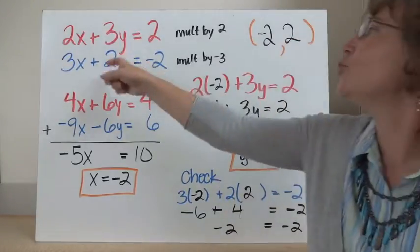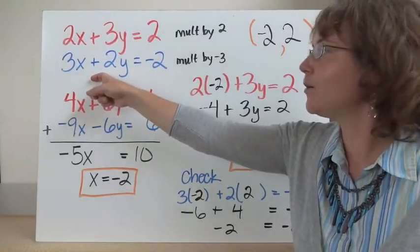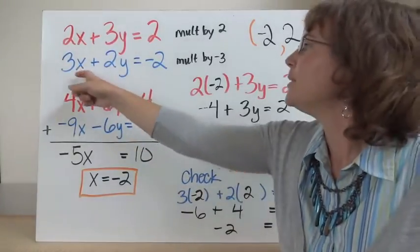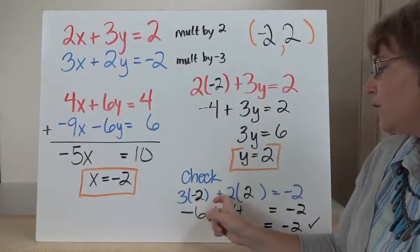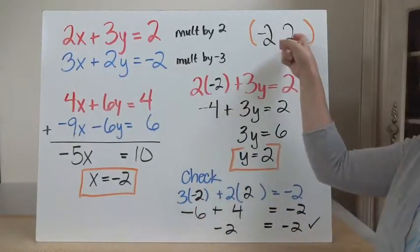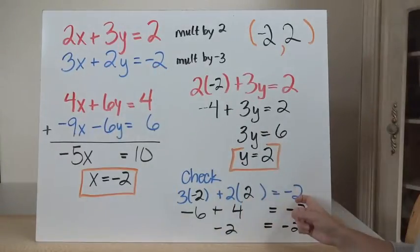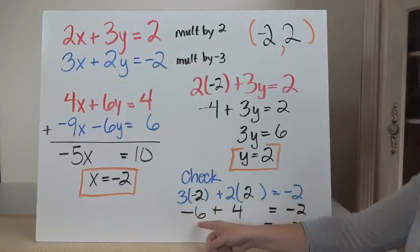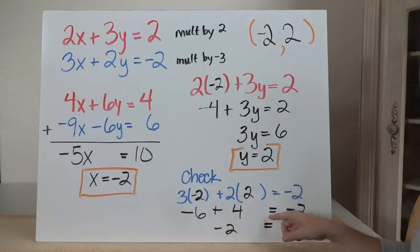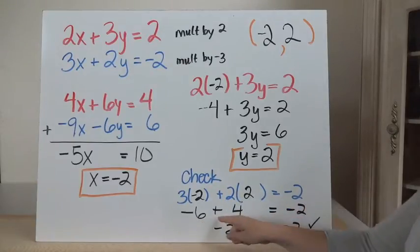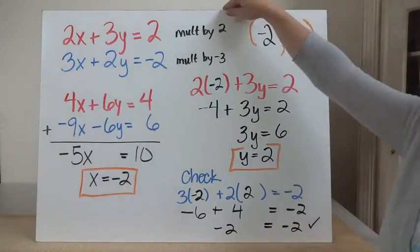This is the solution to both of these equations. I can do my check using my second equation. So 3 times negative 2 plus 2 times 2 equals negative 2. 3 times negative 2 is negative 6, plus 2 times 2 is 4. Negative 6 plus 4 is negative 2, which is also equal to negative 2.